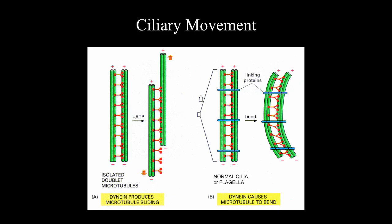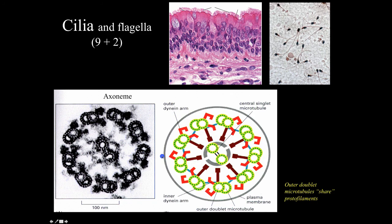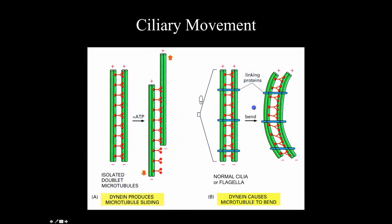For ciliary movement, it is all about the dynein arms. Dynein moves microtubules in the minus direction. In isolated microtubules in vitro, dynein would cause them to walk past each other toward the minus direction. In the intact ciliary axoneme, linking proteins constrain how far the microtubules can slide past each other, so instead of sliding completely off, they bend — producing the characteristic ciliary movement.